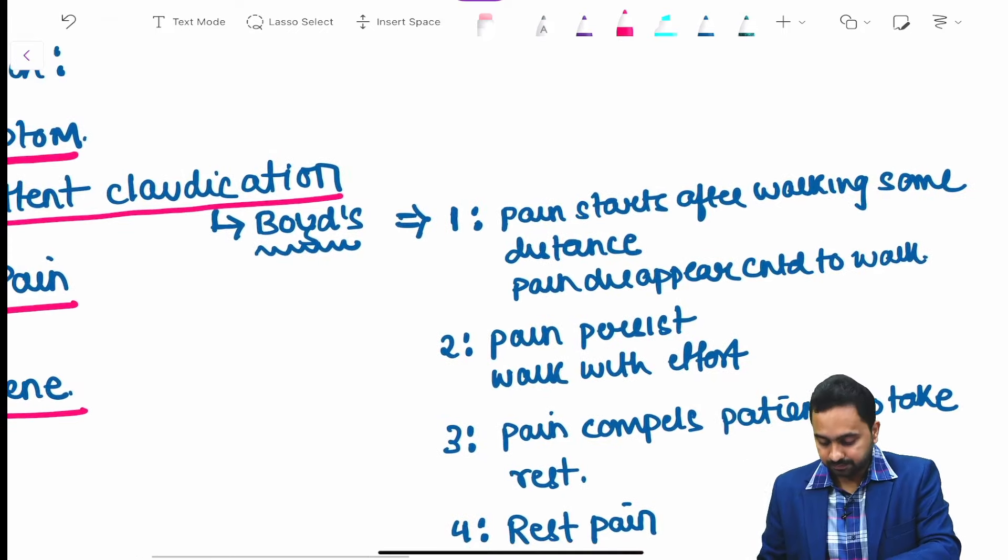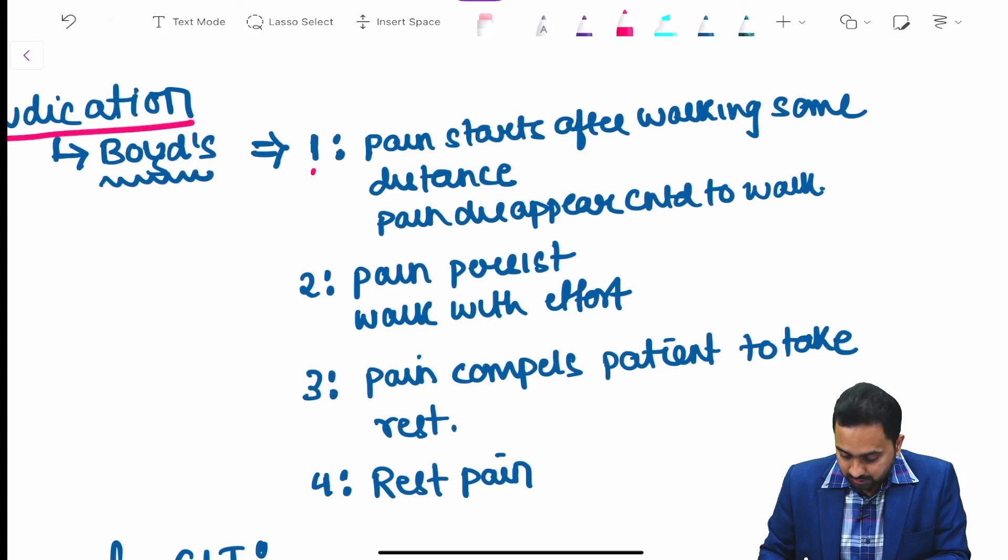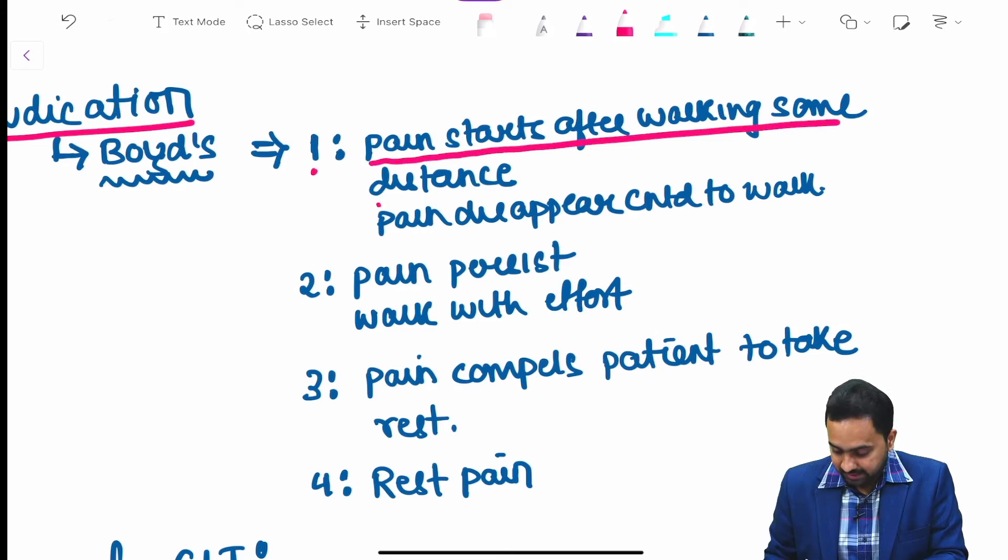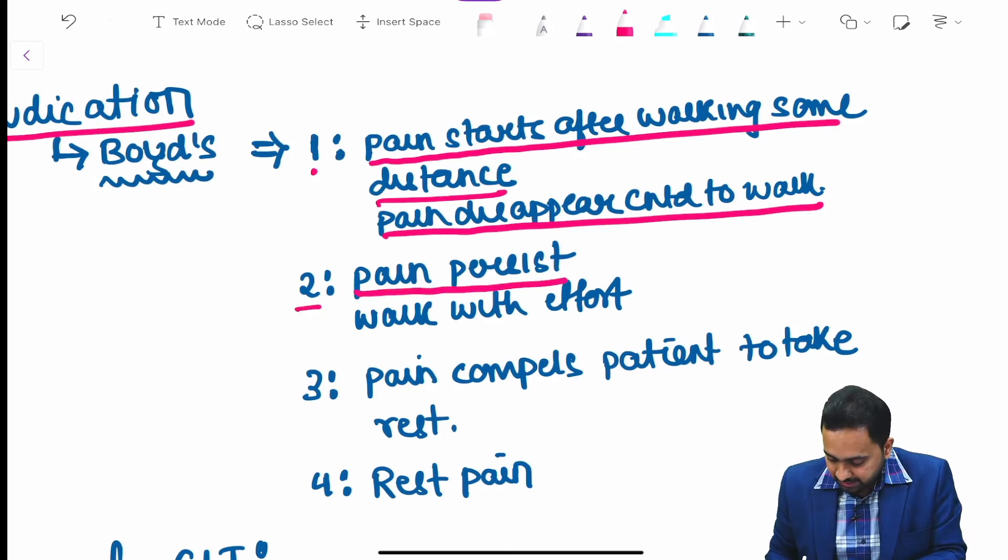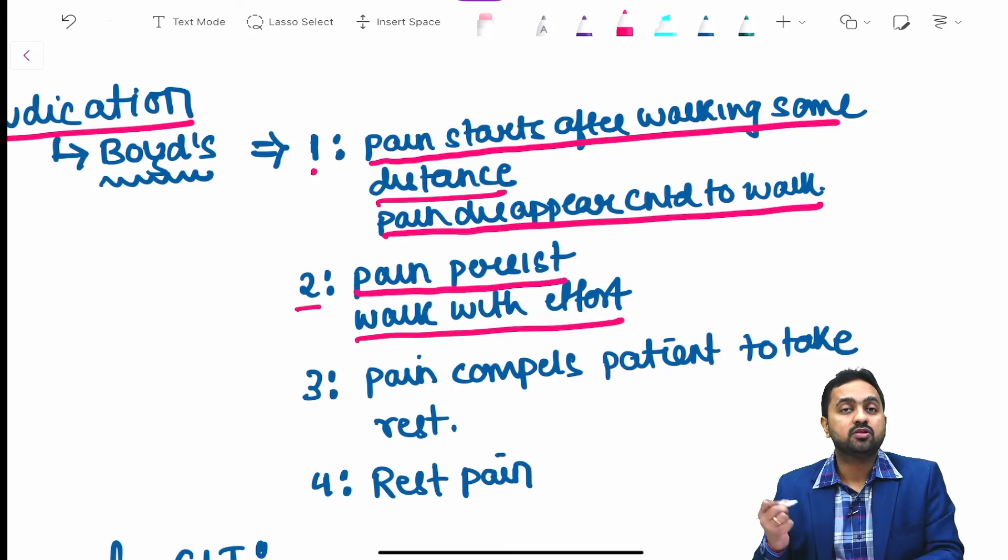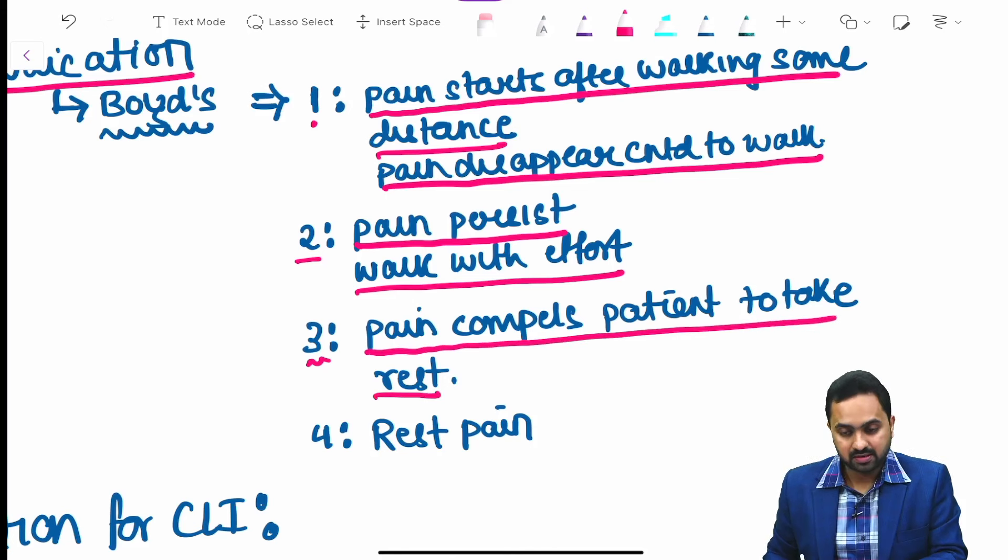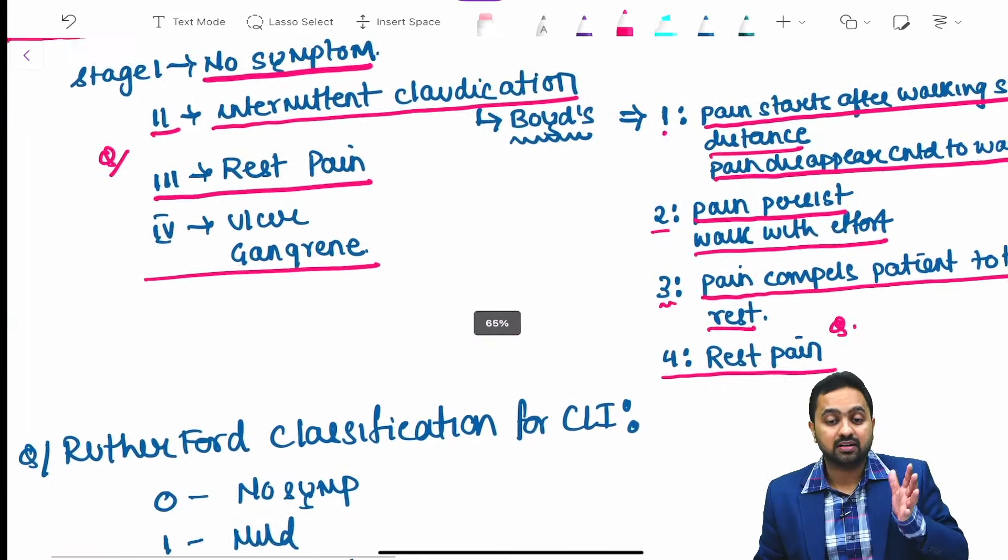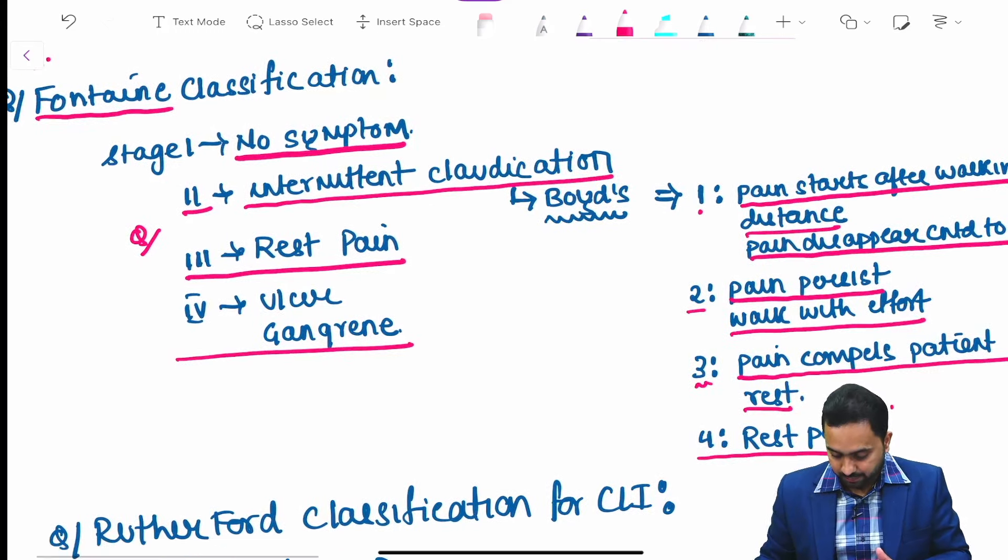Intermittent claudication has another classification, Boyd's classification. Grade 1: pain starts after walking some distance, disappears and patient continues to walk. Grade 2: pain persists and patient walks with effort. Grade 3: pain compels patient to take rest. Grade 4 is rest pain. It is stage 3 rest pain in Fontaine classification whereas stage 4 in Boyd's classification.